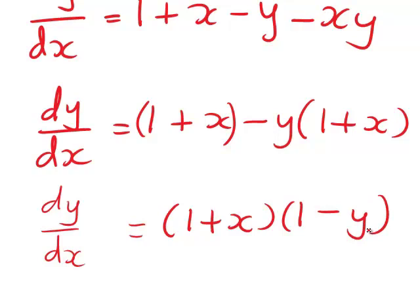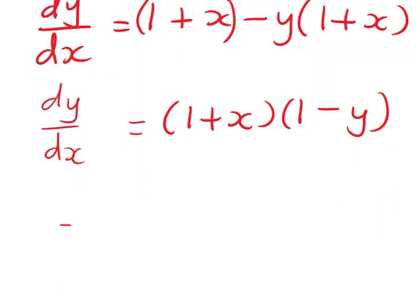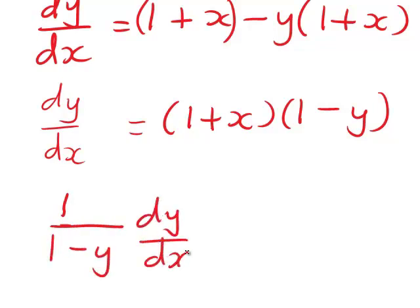From there, we need to get all y terms with dy/dx. If we divide both sides by (1 minus y), that gives us 1 divided by (1 minus y) times dy/dx equal to 1 plus x.